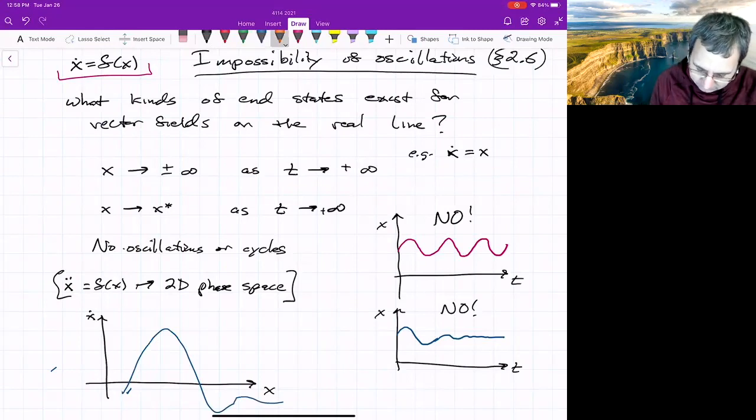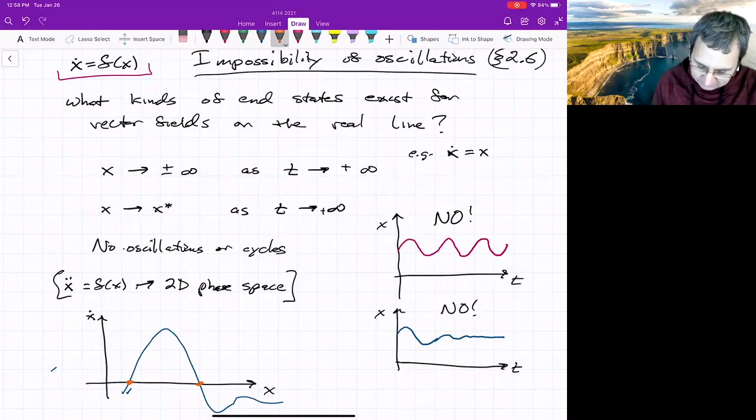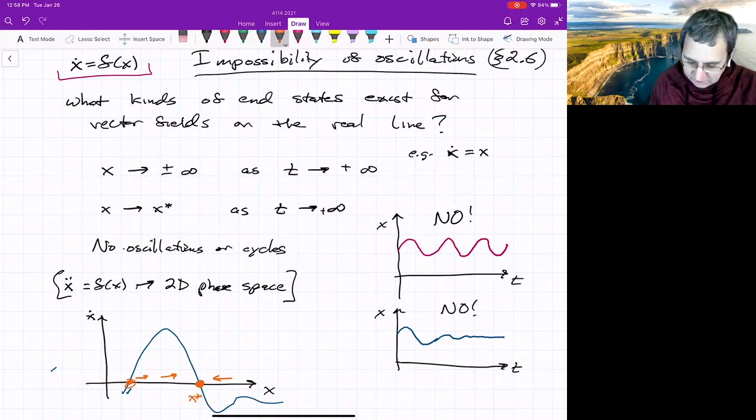You've got these points that intersect x dot equals zero. So that's where it's a fixed point. And if the slope is going up, then this would be like moving to the right. And everything here is then going to end up, if you're to the left of this right point, you just sort of end up there. So that would be one of the end states. All right, so for any curve you could draw, it's just one of these two options.